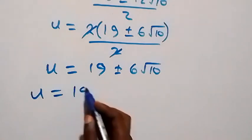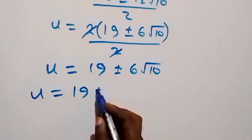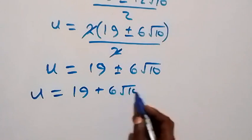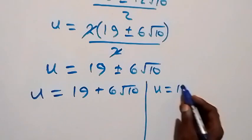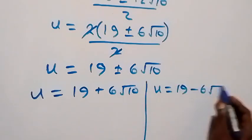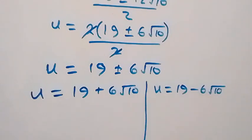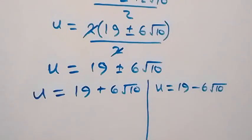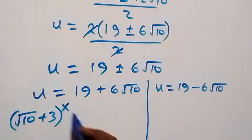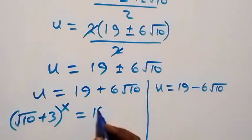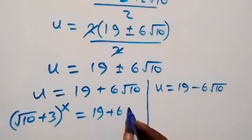We have two possible values of u: u equals 19 plus 6 root 10, or u equals 19 minus 6 root 10. Recalling that u represents (root 10 plus 3) raised to power x, we have (root 10 plus 3) raised to power x equals 19 plus 6 root 10.